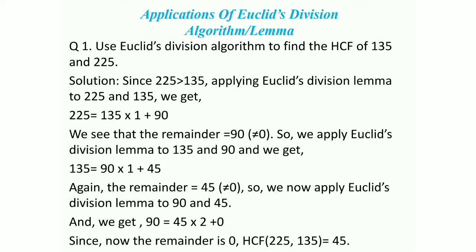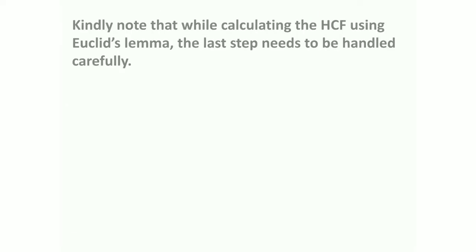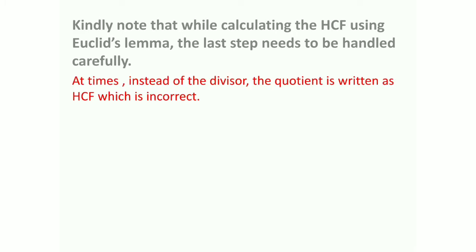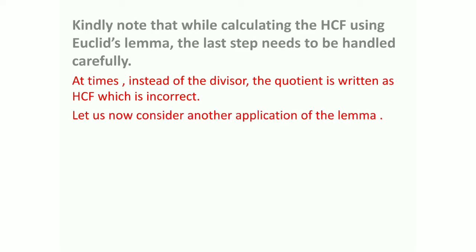So 45 was the last divisor we had, and that last divisor is the HCF of the two numbers. Please note that while calculating the HCF using Euclid's Division Lemma, the last step needs to be handled very carefully. At times, instead of the divisor, the quotient is written as the HCF, which is incorrect. So please keep that in mind.